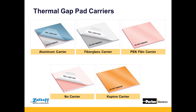The aluminum carriers are the only ones that come with a pressure-sensitive adhesive. For applications that don't need the material attached to the component, we recommend one of the other films — the fiberglass carrier is the most commonly used. The cap-down and pen film are used in applications where shearing could occur, as these films are shear-resistant. The cap-down carrier is thermally enhanced, actually boosting the thermal conductivity and lowering the thermal impedance of the pad itself.